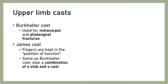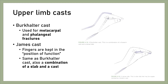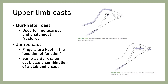Burkhalter cast is used for metacarpal and phalangeal fractures. James cast keeps fingers in the position of function, similar to the Burkhalter cast. It is also a combination of a slab and a cast — initially a volar slab is applied to the forearm and hand with the joints in the correct position, and then a forearm cast is applied.